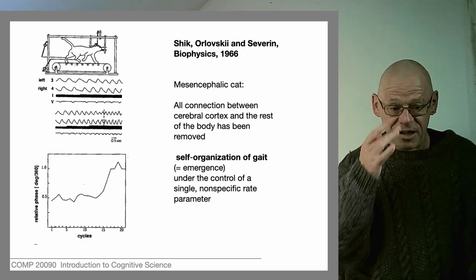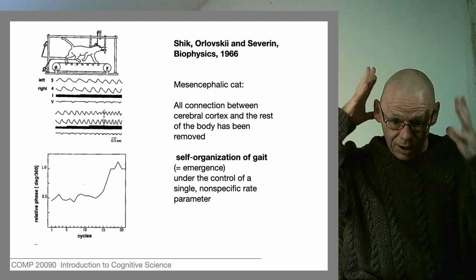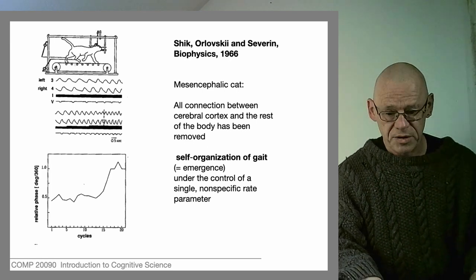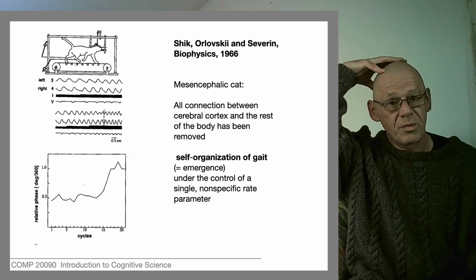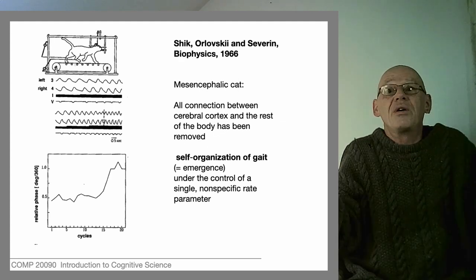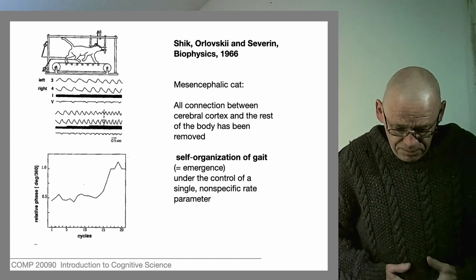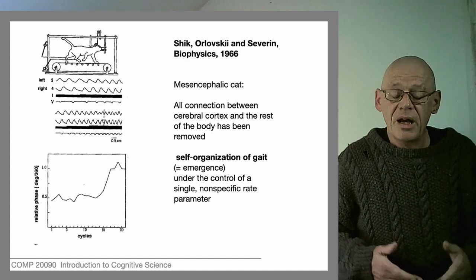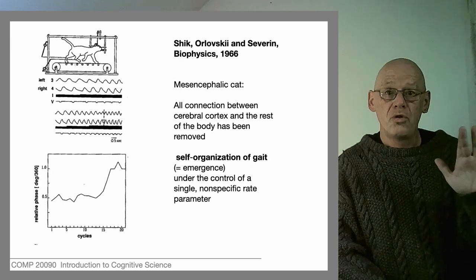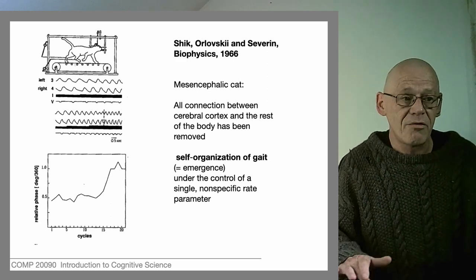In the 1960s there were some rather ghastly experiments done by Soviet scientists in which they severed the connection between the cerebral cortex — the outer part of the brain — and the spinal cord on a cat. This cat could do no voluntary movement; by severing those connections it was paralyzed, completely limp. But when placed on a treadmill and supported by a sling — because it couldn't stand — when the treadmill was moved, the legs self-organized into more or less normal gaits with fixed phase relationships between all four legs.